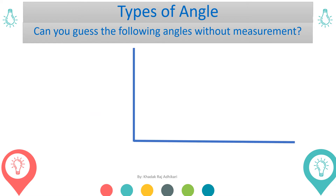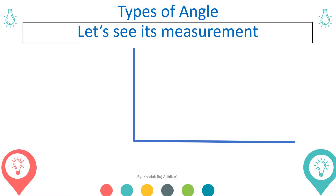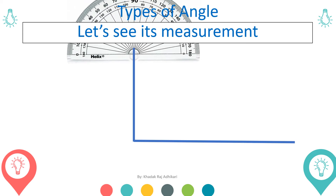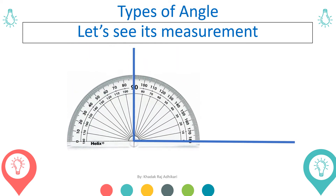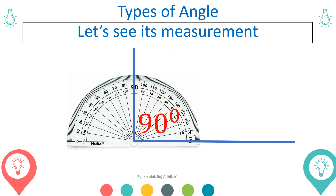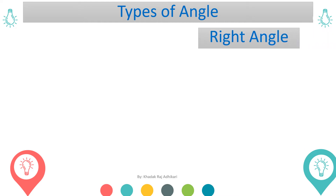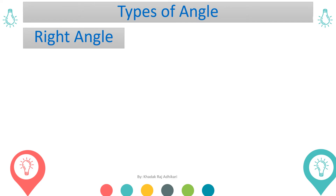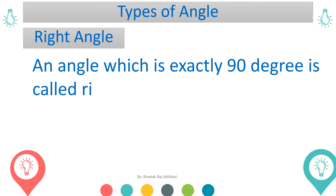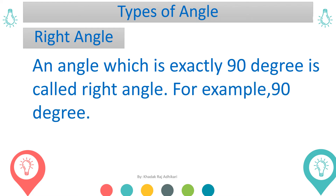Similarly, can you guess the measurement of this angle? Let's see the measurement. The measurement of the angle is 90 degrees. This angle is known as a right angle. An angle which is exactly 90 degrees is called a right angle.